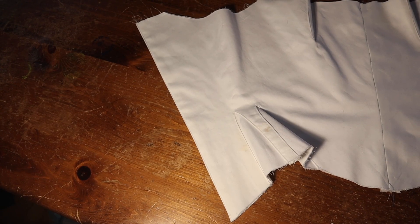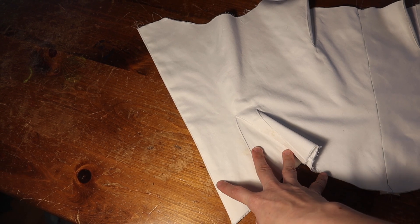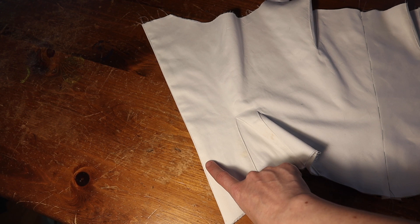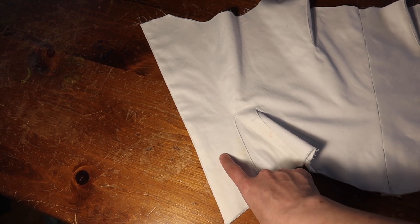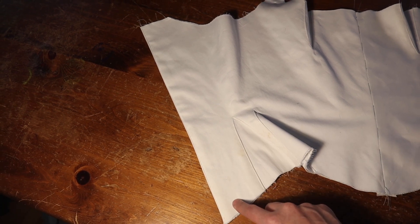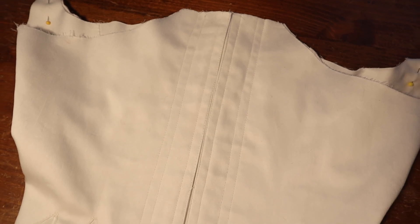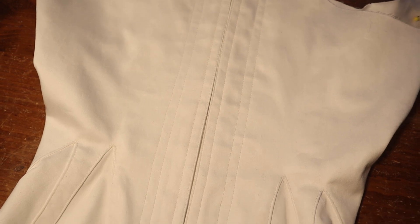Now I'm going to sew the channels for the boning. I'm using six millimeter synthetic whalebone from Burnley and Trowbridge and a quarter inch channel usually works well for this. I'll stitch one channel right along the edge and then leave about a half inch gap for the lacing holes. Then one more quarter inch channel on the other side. Here are the center back edges with all of the boning channels stitched in. This is the only place that has any boning in the entire stays except for the busk at the front.